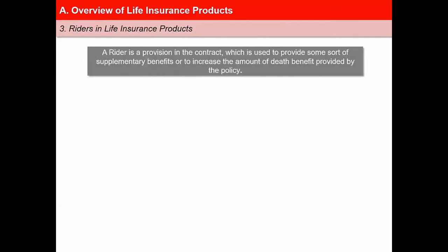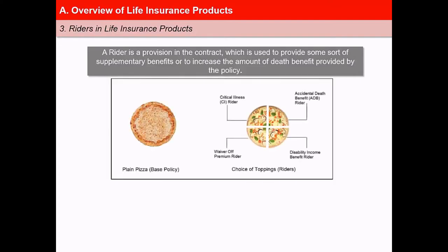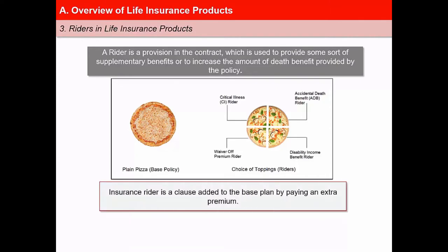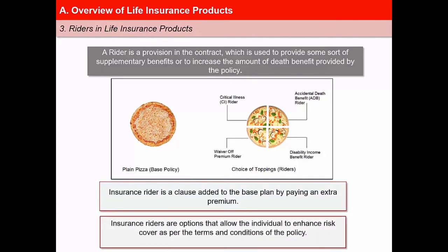A rider is a provision in the contract which is used to provide some sort of supplementary benefits or to increase the amount of death benefit provided by the policy. If we compare a base policy with a pizza base, then the choice of riders is like the choice of different pizza toppings available to customize the pizza as per an individual's requirement. In this way, riders help to customize different requirements of a person into a single plan.